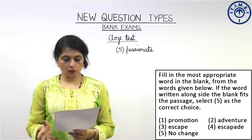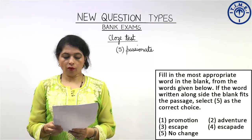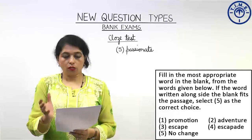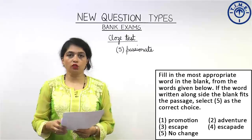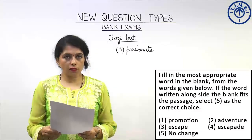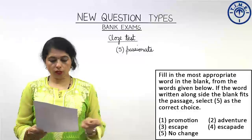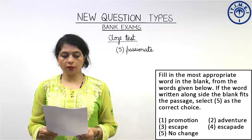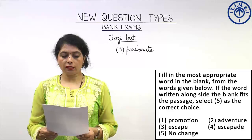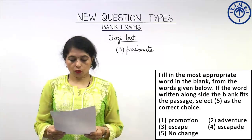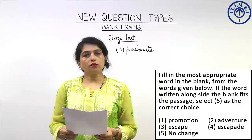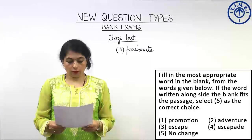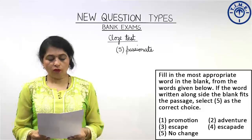For question 2, the directions say: fill in the most appropriate word from the words given below; if the word written alongside the blank fits the passage, select 5 as the correct choice. The word given next to the blank is 'diversion.' Let us see if diversion is correct or needs to be replaced. The sentence reads: 'I spent most of my life in a library and I do not know what life would be like if I did not have that [diversion].' Diversion means distraction or turning aside from a purpose, so it is not a logical choice here.